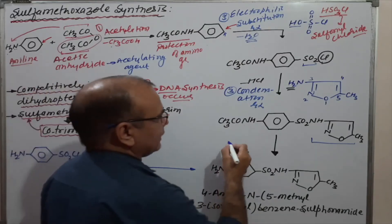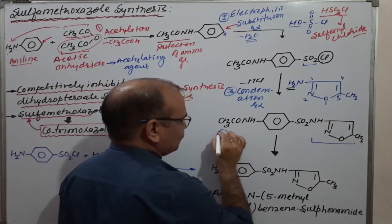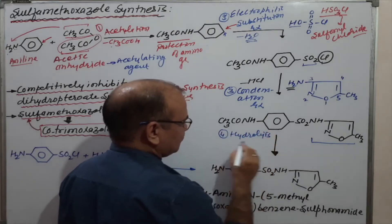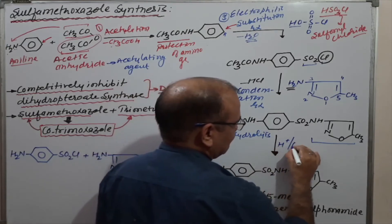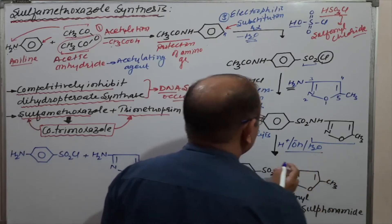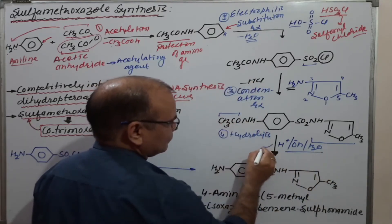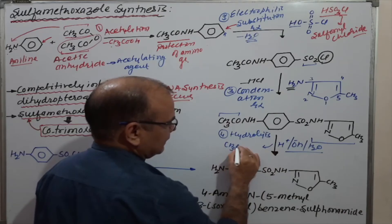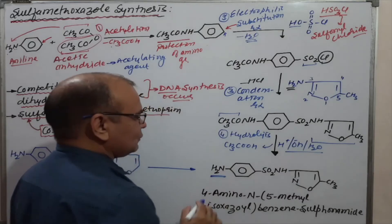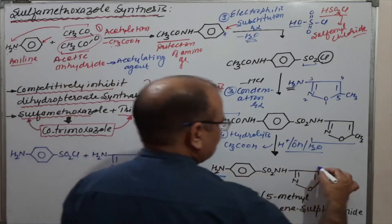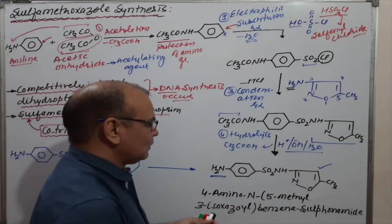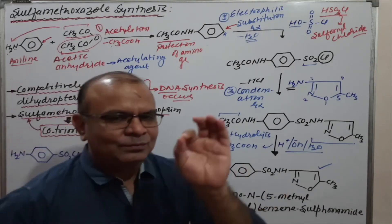Since we protected the amino group in the initial step, reaction number four is hydrolysis — either acidic or alkaline hydrolysis in the presence of water. This removes the acetyl protecting group as acetic acid and restores the free amino group. The resulting drug obtained is sulfamethoxazole.